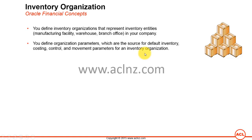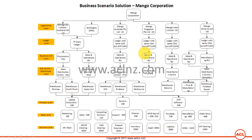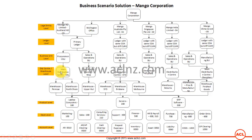In terms of where the inventory organization sits in the accounting structure: the first level is legal entity, then ledger, then operating unit, and within that operating unit you define your inventory organization. It could be a warehouse, distribution center, manufacturing facility, or a logical distribution center address. Within that you can define physical warehouses, which are called sub-inventories. In this particular example the inventory organization is a logical entity but has an associated address.